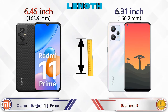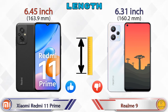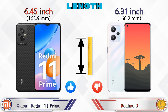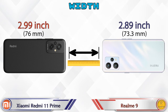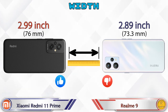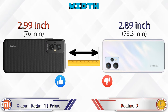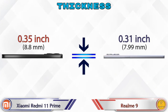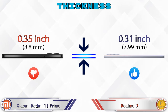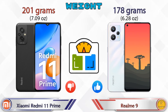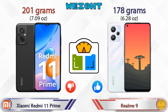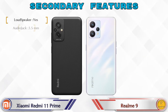Looking at dimensions: Xiaomi Redmi 11 Prime is 6.45 inches long and Realme 9 is 6.31 inches. Width is 2.99 inches on the Redmi 11 Prime and 2.89 inches on the Realme 9. Thickness is 0.35 inches on the Redmi 11 Prime and 0.31 inches on the Realme 9. Weight is 201 grams for the Xiaomi Redmi 11 Prime and 178 grams for the Realme 9.